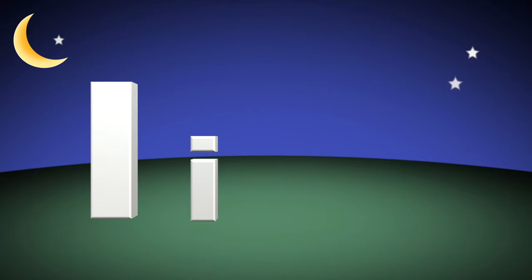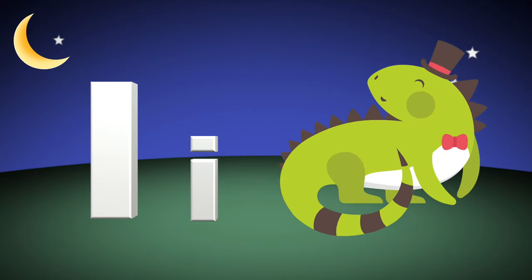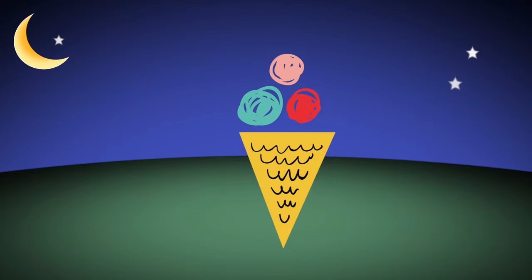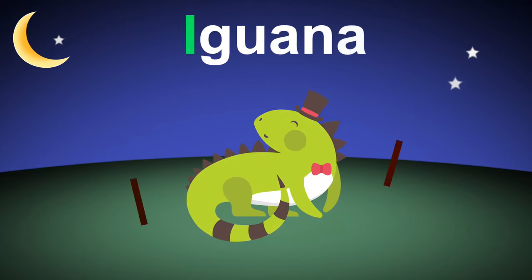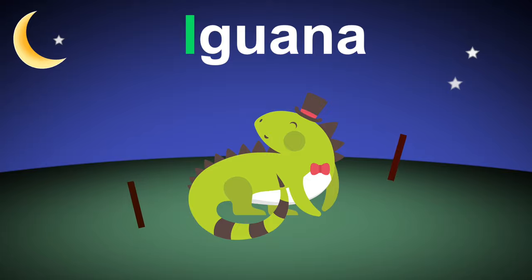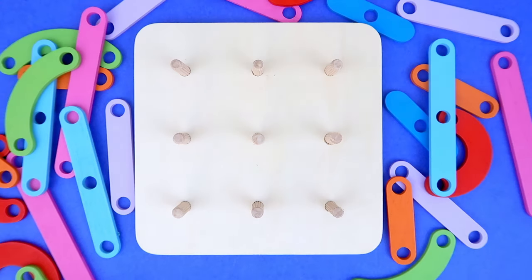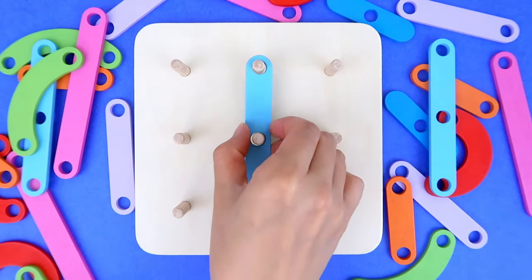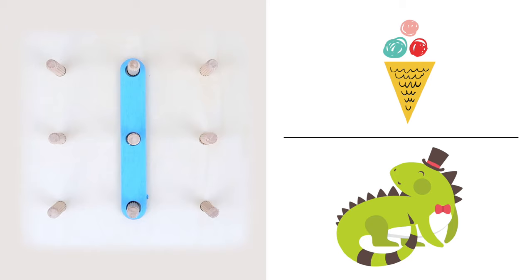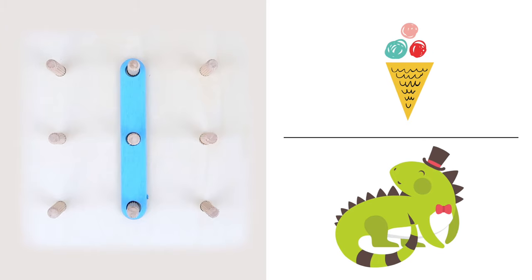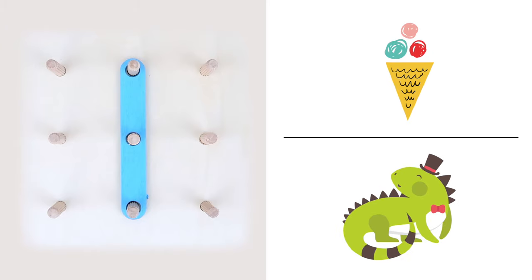I is for iguana. I is for ice cream. i, ice cream, i, iguana. Letter I: ice cream, iguana.